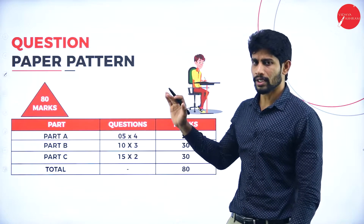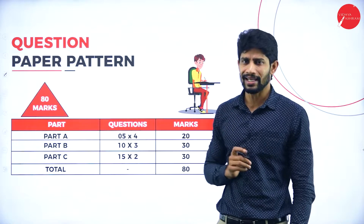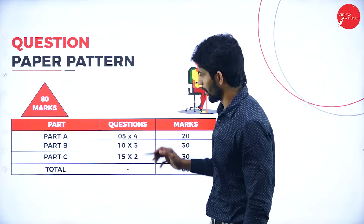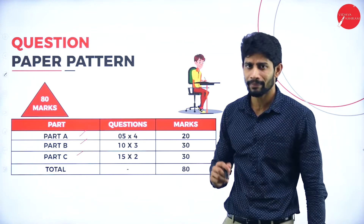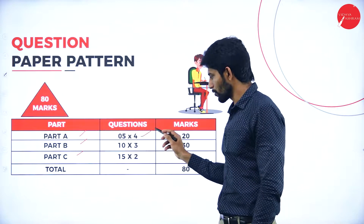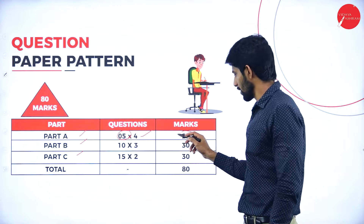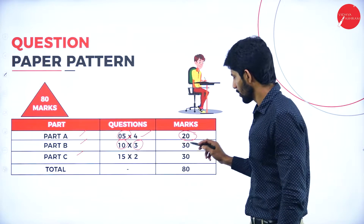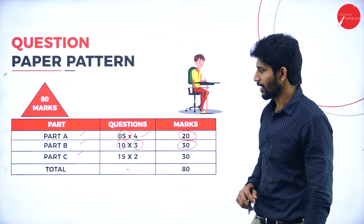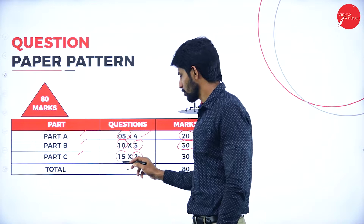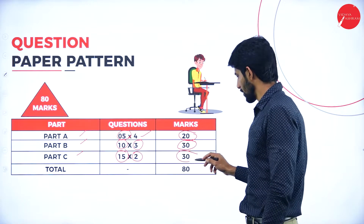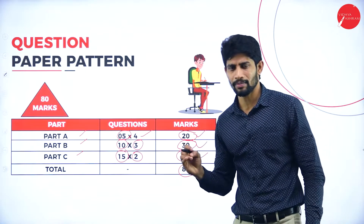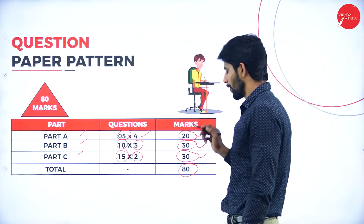Regarding the question paper pattern, in this subject you will attend the exam for 80 marks, written in three parts. Part A: four questions, each carrying five marks, totalling 20 marks. Part B: three questions, each carrying 10 marks, totalling 30 marks. Part C: two questions, each carrying 15 marks, totalling 30 marks. So in the main exam, you will attend for a total of 80 marks.